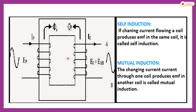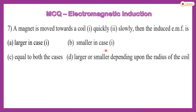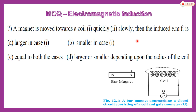So self-induction occurs when the EMF is induced in the same coil due to changing current, and mutual induction occurs when the changing current in the primary coil induces EMF in the secondary coil. Now the next question is: a magnet is moved towards a coil quickly or slowly — then the induced EMF is?